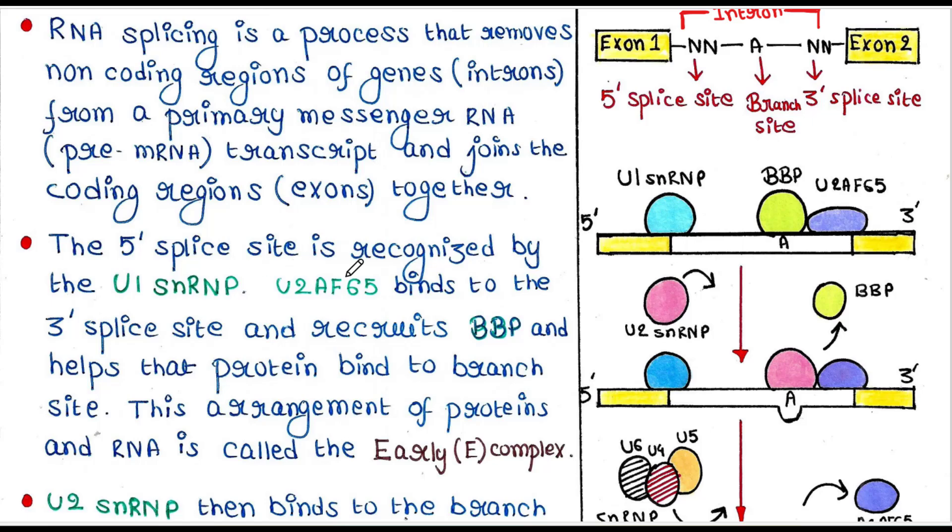Now, the 5' splice site is recognized by the U1 snRNP. U2AF65 binds to the 3' splice site and recruits BBP and helps that protein bind to the branch site. So, the 5' splice site is occupied by U1 snRNP, the 3' splice site is occupied by U2AF65, and the branch site is occupied by BBP. This arrangement of proteins and RNA is called the early E complex.